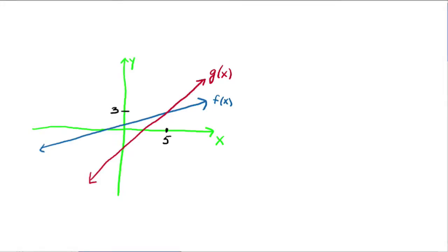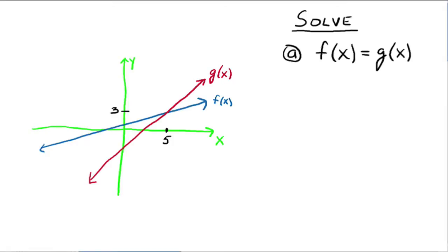Suppose we have the graphs of two functions — the blue being f, the red being g. They intersect at the point (5, 3). Given this graph, we can actually solve certain questions. For example, let's solve f(x) = g(x).